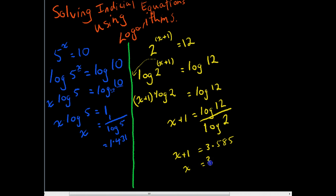Now if I do this, this plus 1 can move from this side to this side and become negative. So 3.585 minus 1, that means that x is going to equal 2.585.